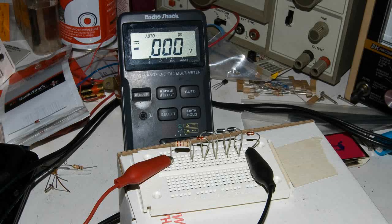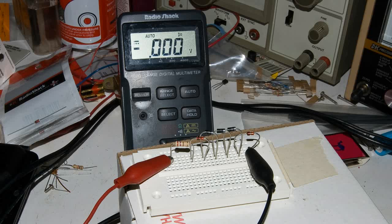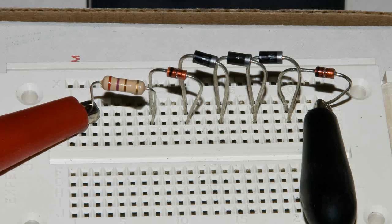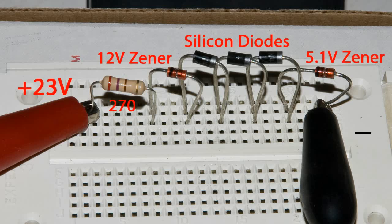Here are the components all wired up and hooked up to our 23 volt power supply. There's a little bit closer look at the circuit. And all the way to the left is 23 volts positive. Then we have a 270 ohm resistor, then our 12 volt Zener, our three silicon diodes, and then to the right is our 5 volt Zener diode and our negative connection to the power supply.